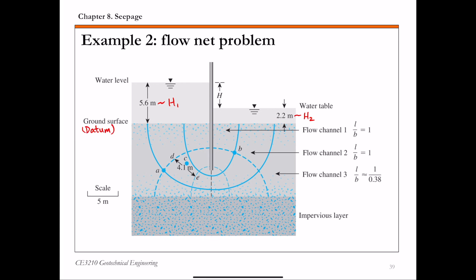For this flow net, we have solid lines — those are the flow lines, showing how water travels from upstream to downstream. The dashed lines are the equipotential lines. Points on one equipotential line have the same potential or same total head.